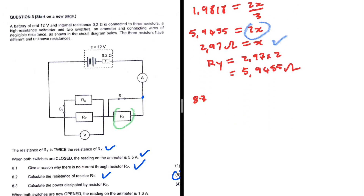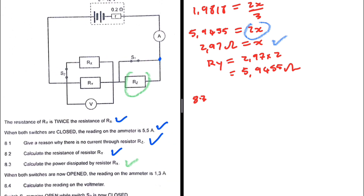For question 8.3, calculate the power dissipated by Rx. We know the resistance of Rx is 2.97 ohms. To calculate power, we need either the current or the voltage through Rx. The approach here is to find the potential difference across Rx. It's better to calculate the voltage across Rx rather than the current.